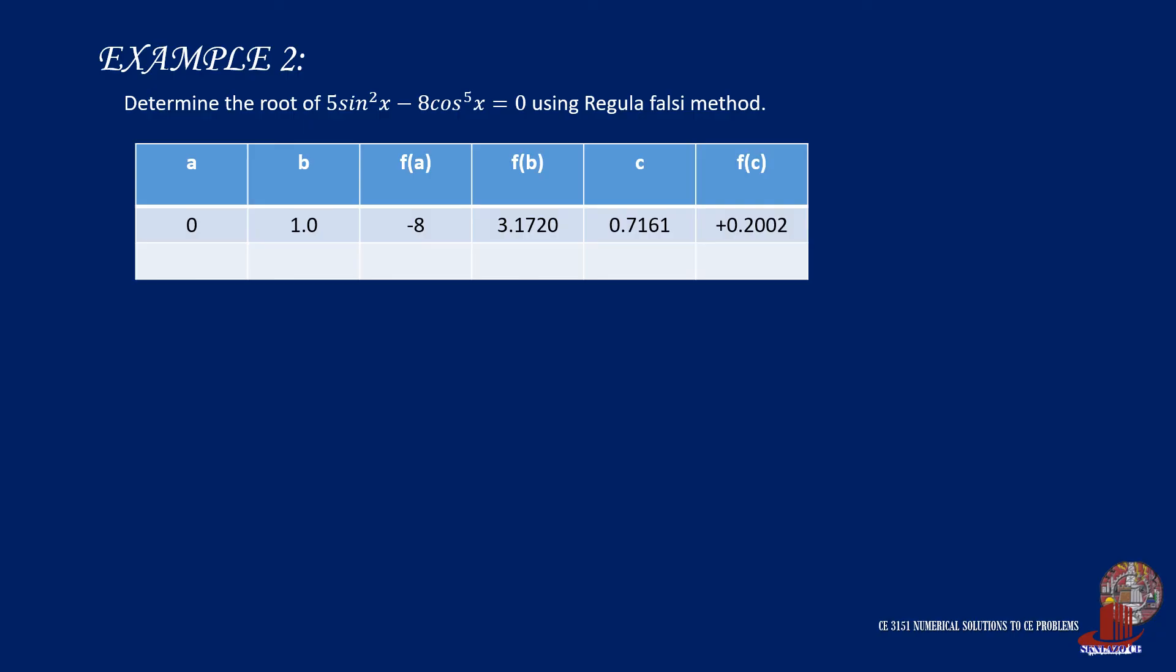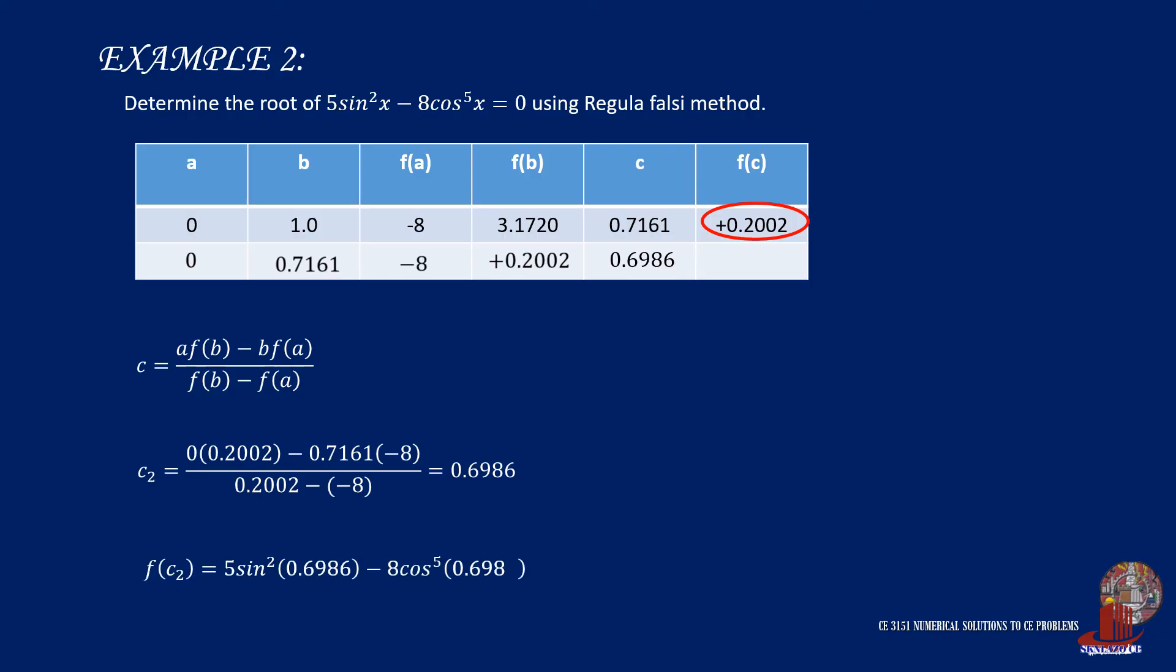Now, work on the iteration based on the sign of function of c. Since the value involves a positive sign, this would imply that c would replace the upper limit, and the function of b becomes positive 0.2002. The lower limit a will still remain the same as well as its function of a. Continue completing the table by using the formula. So c sub 2 is taken as 0.6986. Then the function using this value is -0.0380.